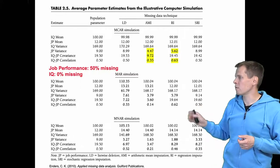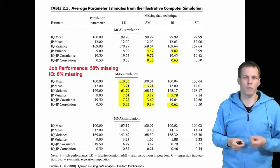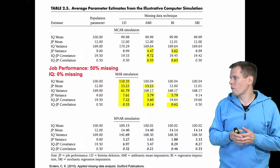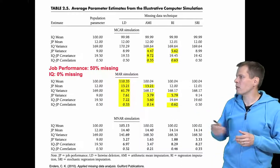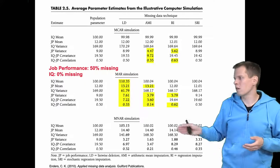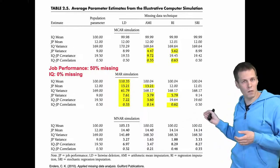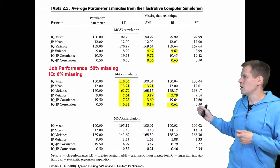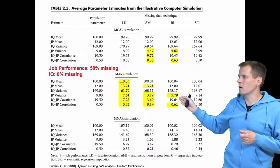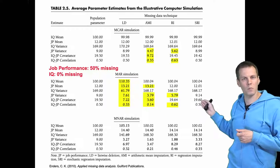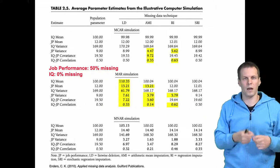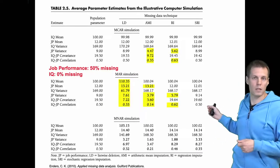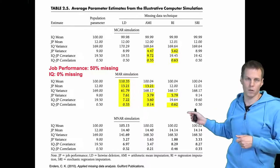The key difference between stochastic regression imputation and standard regression-based imputation is how we model variance. Stochastic regression-based imputation increases the variance of the predicted values by adding random noise, and that variance then also influences the correlation more correctly than standard regression-based imputation.